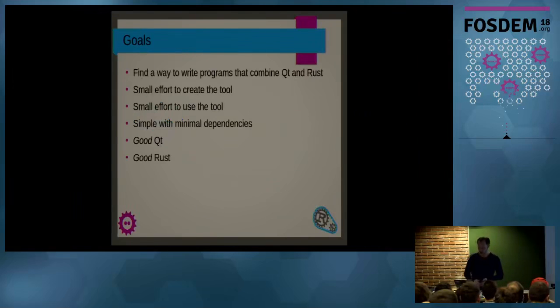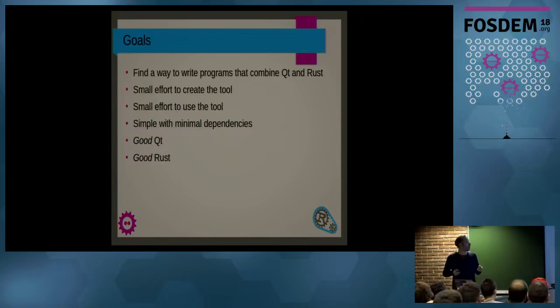We're going to walk through how to write code like this to power a to-do application with Rust and Qt. Back to the slides. The goal of this project was to find a way to write programs that combine Qt or Rust. But since I was doing it this summer as a hobby, it should be a small effort to create this tool. But when it's finished, it should also be a small effort to actually use it. It should be easy to combine these two languages even though C++ and Rust are so very different. It should be simple with minimal dependencies. And, this is very important to me, the end result should be that you write good Qt code and good Rust code.